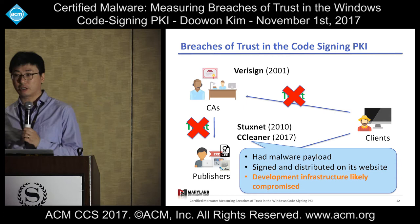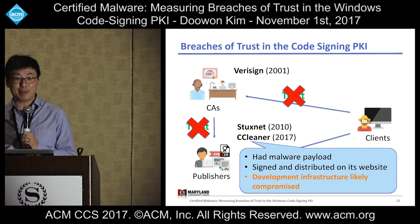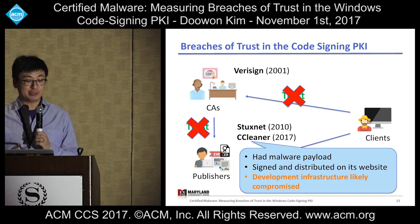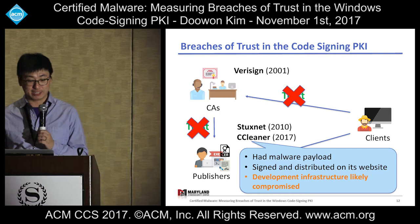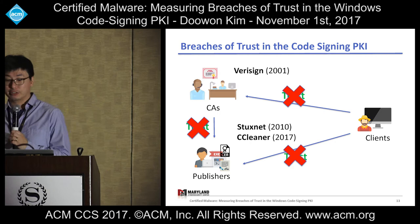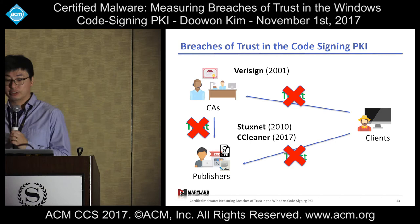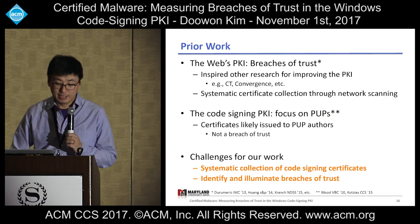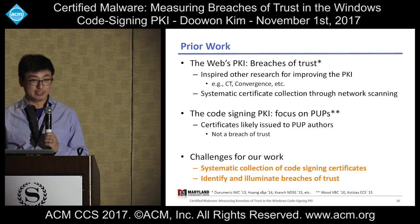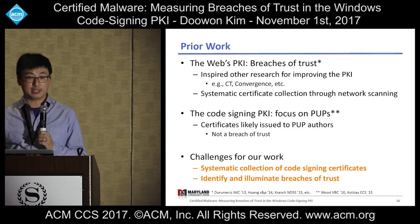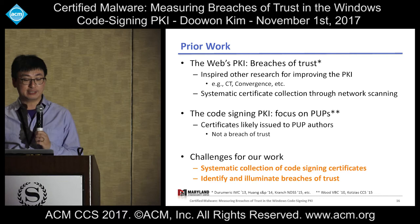Another example is CCleaner, a tool to help users optimize their computers. However, in September, CCleaner had a malware payload and affected millions of users because CCleaner was properly signed and distributed on a legitimate website. The legitimate signature on CCleaner means the developer infrastructure was likely compromised. From these anecdotal examples of breaches of trust, we can know that breach of trust occurs in code sign PKI. However, the breach of trust has never been systematically measured. The breach of trust in TLS PKI is well studied and has inspired other research for improving PKI, such as CT and convergence, because TLS certificates are systematically collected through network scanning. In code sign PKI, there are only a few prior works, and those focus on PUP files, so breaches of trust have not been studied yet.